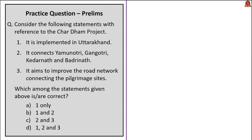The next question is about the Char Dham project. Statement 1 — it is implemented in Uttarakhand — is correct. Statement 2 — it connects Yamunotri, Gangotri, Kedarnath and Badrinath — is correct; 'Char' means four in Hindi, referring to these four pilgrimage sites. Statement 3 — it aims to improve the road network connecting the pilgrimage sites — is also correct. All statements are correct, so the answer is option D: 1, 2 and 3.